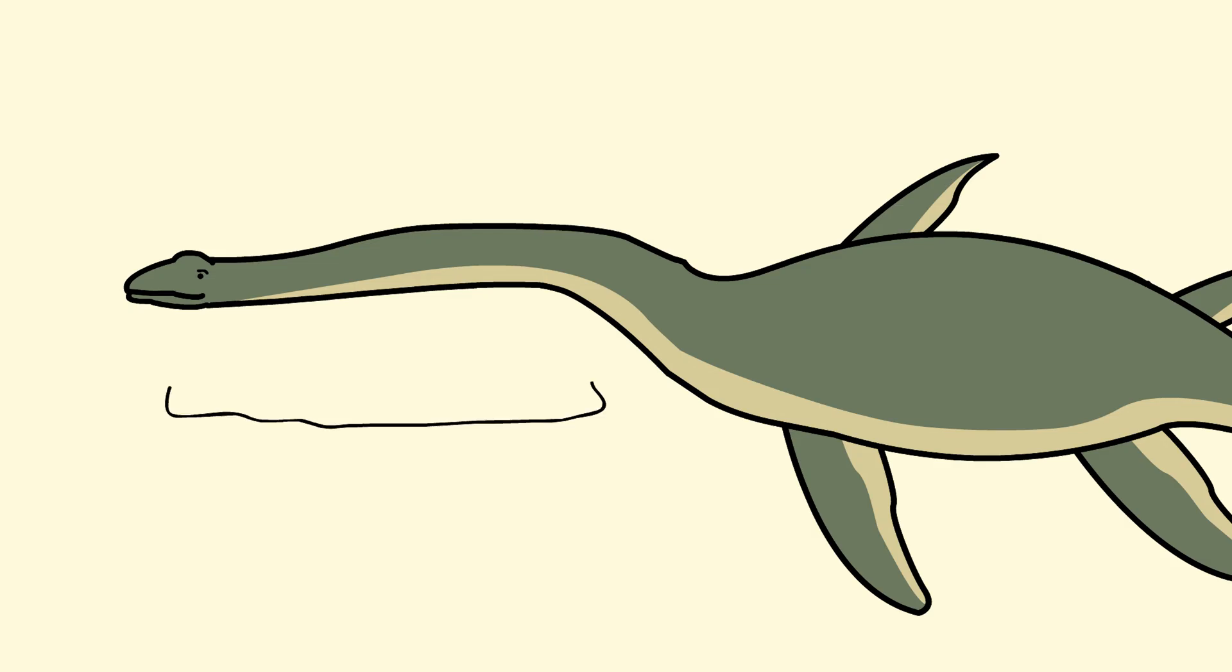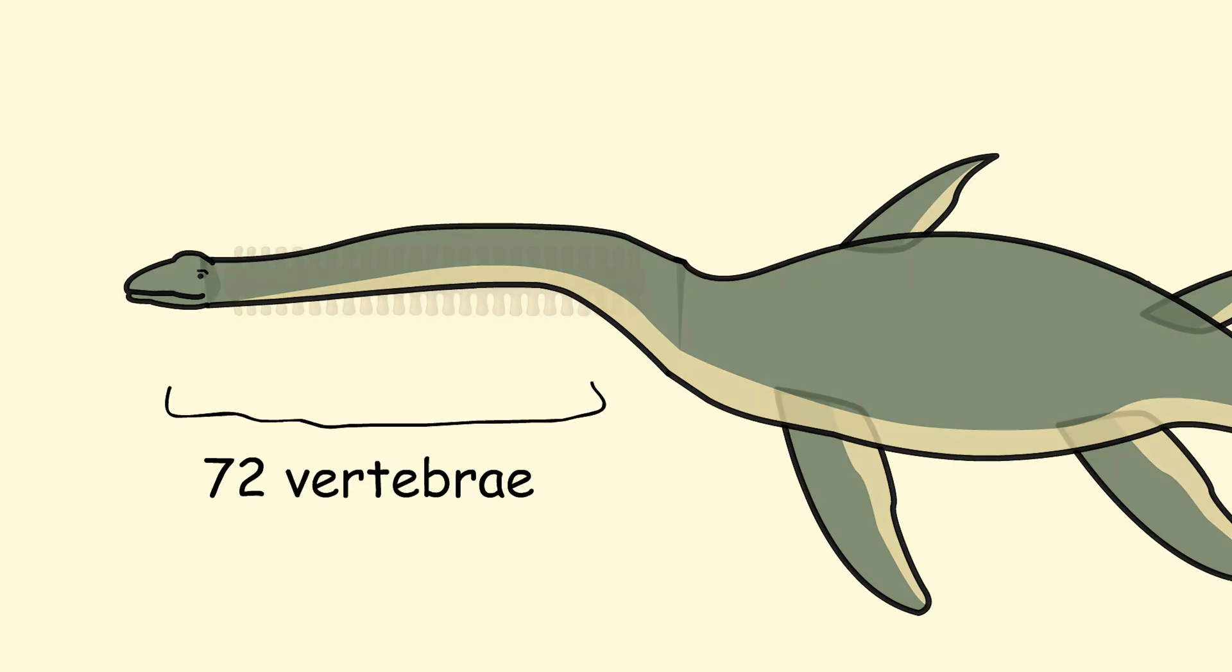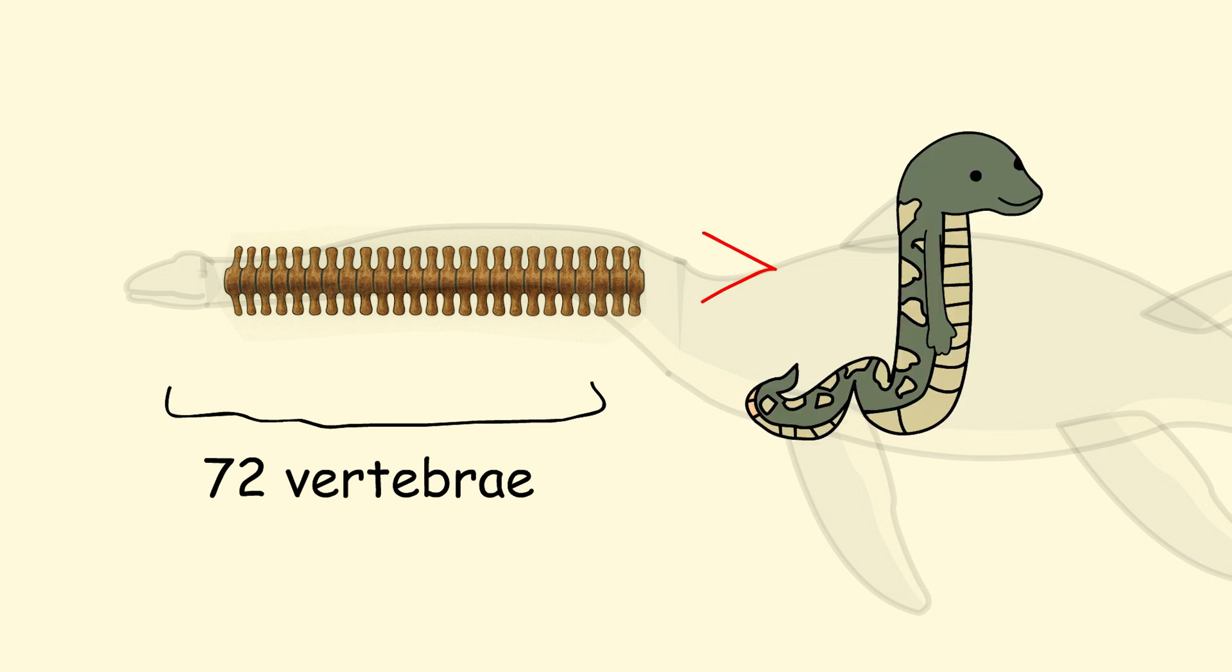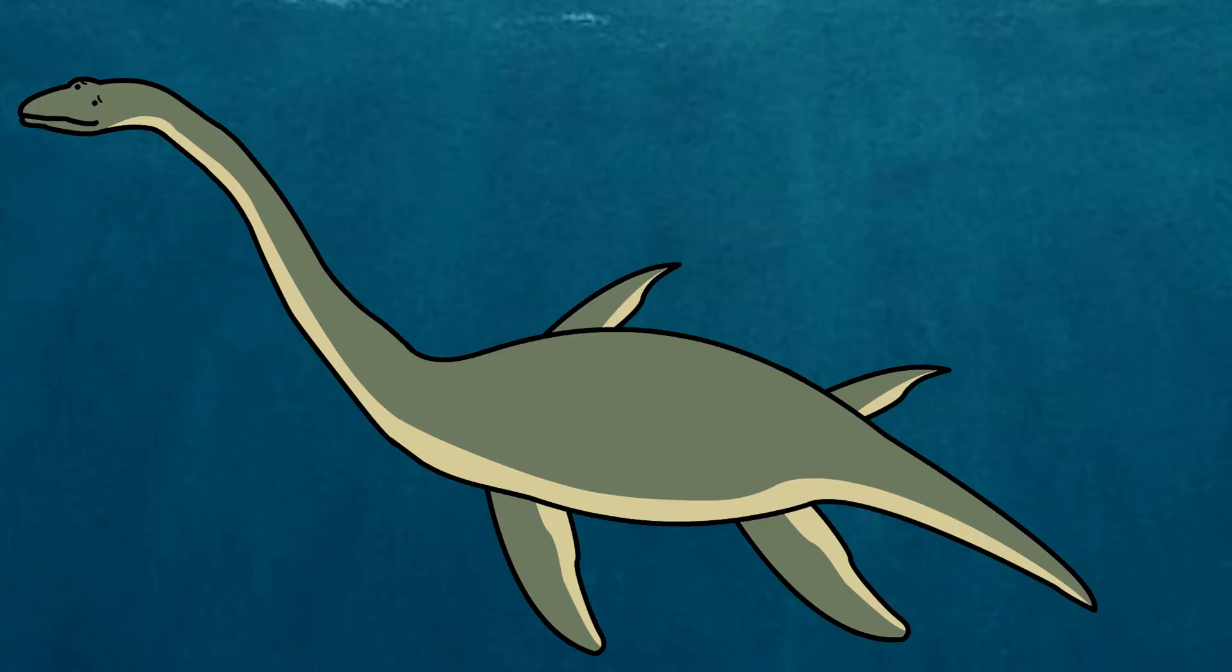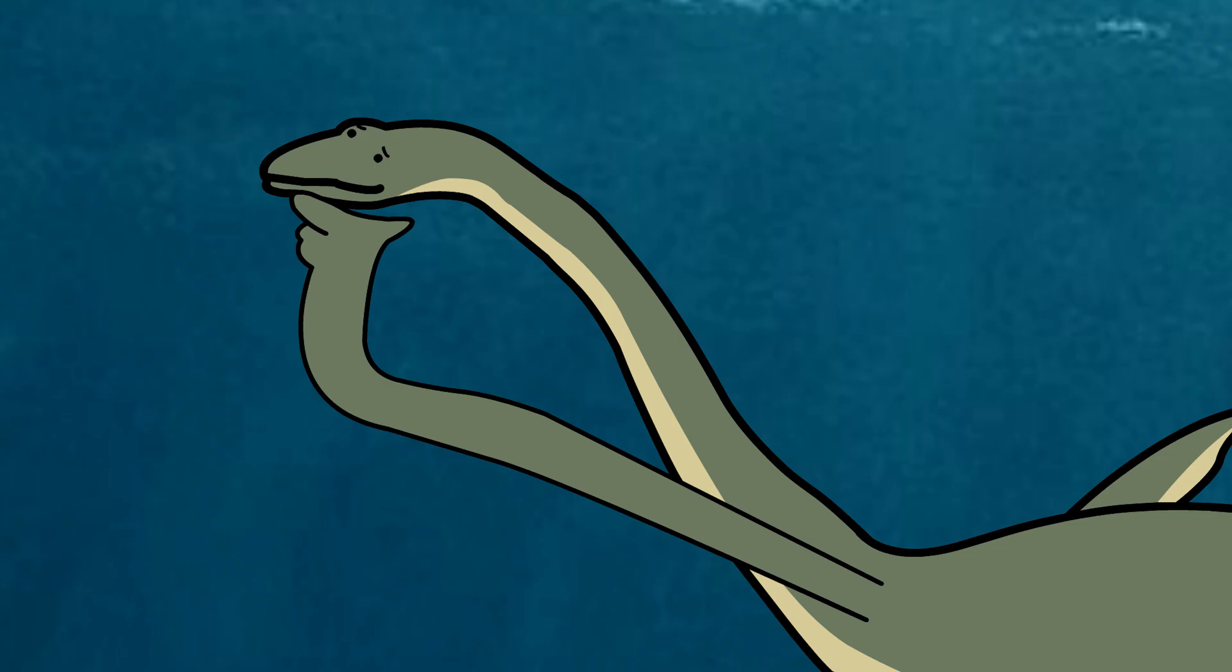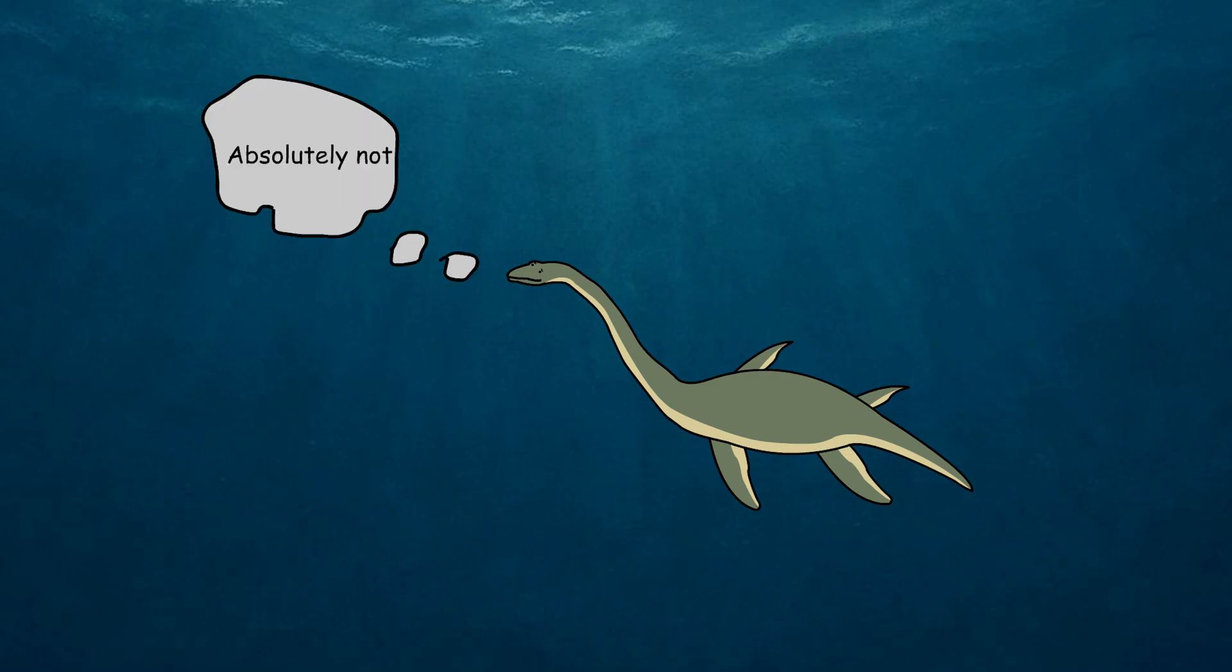That neck? It's 23 feet long. You've got 72 vertebrae, which is more than most snakes. It's like dragging a garden hose behind you at all times. Graceful? Maybe. Efficient? Absolutely not.